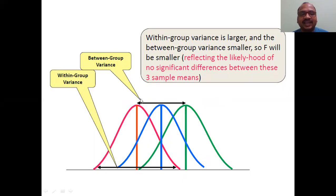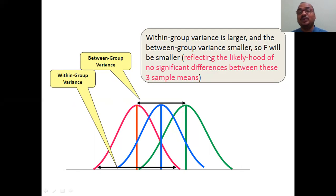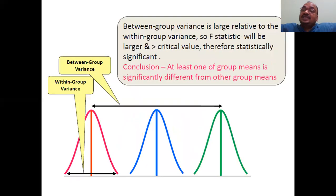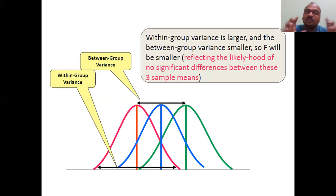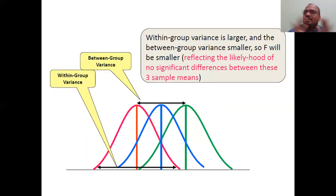In this second diagram, the between-group variance shown by the black line is small, while the within-group variance is larger. The length of the black line is important here — within-group variance is larger and between-group variance is smaller. So F is smaller, reflecting a likelihood of no significant difference between these three sample means. Both groups are very close to each other, but within each group the data is very widely distributed. That is the key difference between between-group and within-group variance.